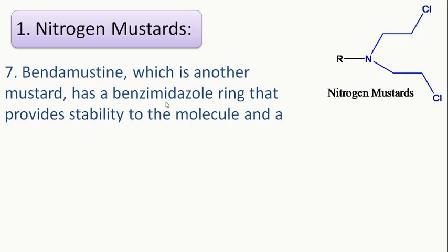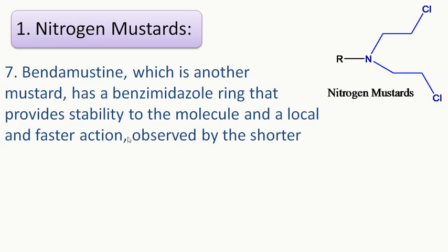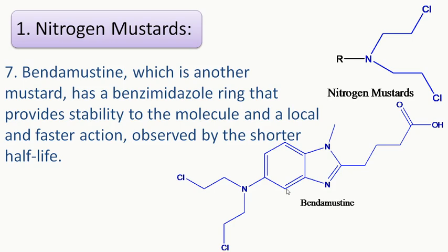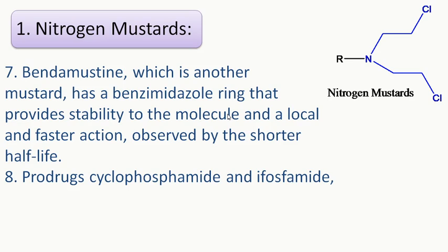Bendamustine is another nitrogen mustard that has a benzimidazole ring providing stability to the molecule and a local and faster action observed by its shorter half-life. You can see in bendamustine there is a benzimidazole ring — a benzene ring fused with an imidazole ring. At the 2-position of the methylimidazole ring, a butyric acid chain is attached. Overall, this group provides stability and the observed shorter half-life.